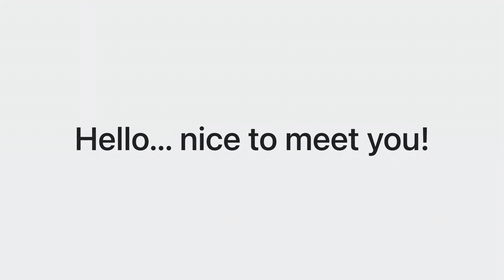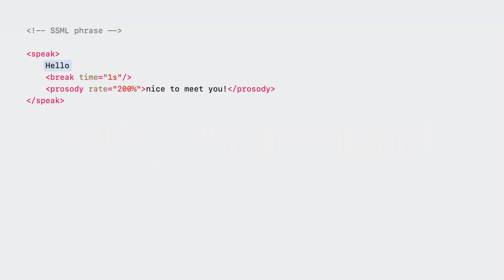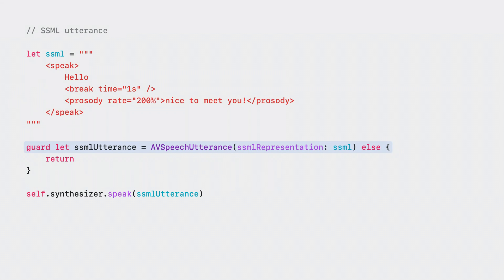Let's take a look at how you can use SSML. Take this example phrase that has a pause in it. We can represent this pause in SSML. We'll start with our hello string, add our one-second pause using an SSML break tag, and finish by speeding up 'nice to meet you.' We do this by adding an SSML prosody tag and setting the rate attribute to 200%.